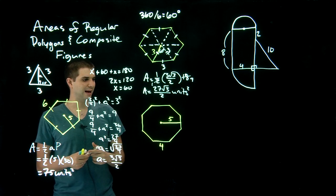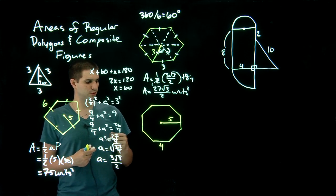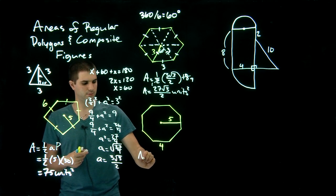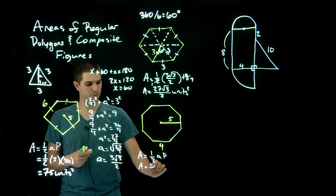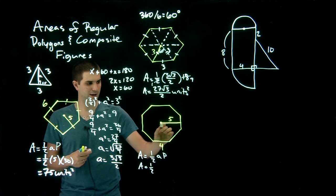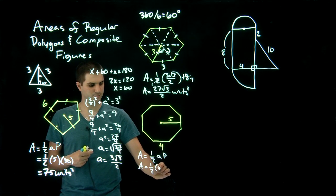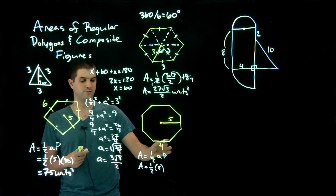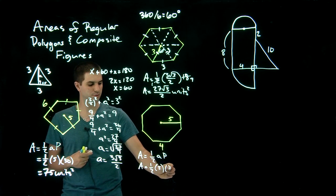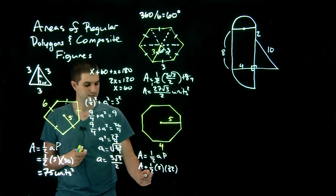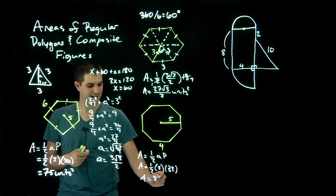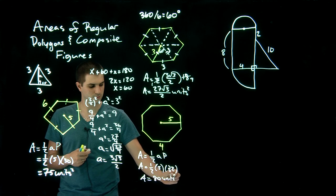Moving on to the octagon: area equals one-half AP. The apothem is given as 5. The perimeter is going to be 4 times 8, which is 32. Half of 32 is 16, and 16 times 5 is 80 units squared.